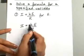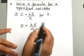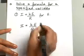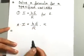Now you want to get E by itself, which means that we want to get rid of the K and the R. So the first thing we will do is get rid of the R, and we will multiply R on both sides.